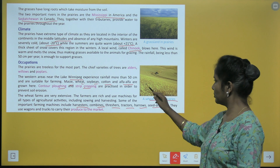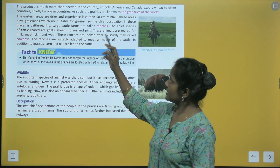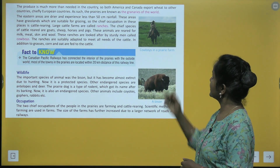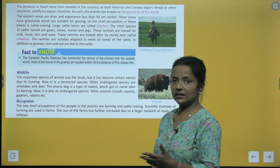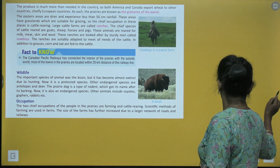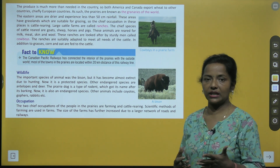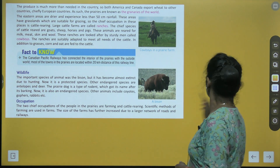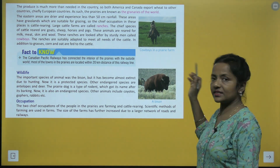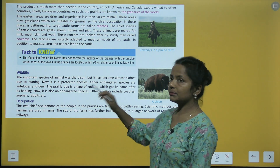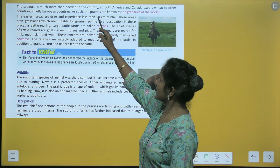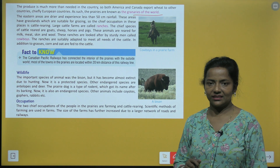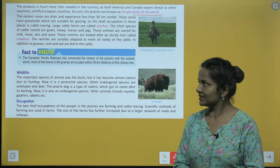A wheat farm in prairies. The produce is much more than needed in the country, so both America and Canada export wheat to other countries — chiefly European countries. As such, the prairies are known as the granaries of the world.